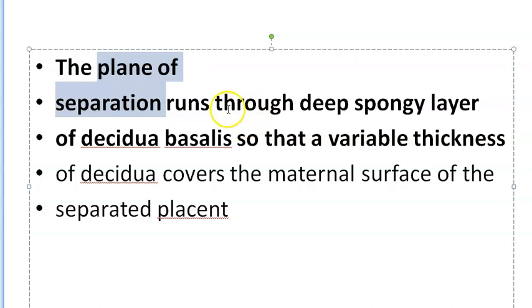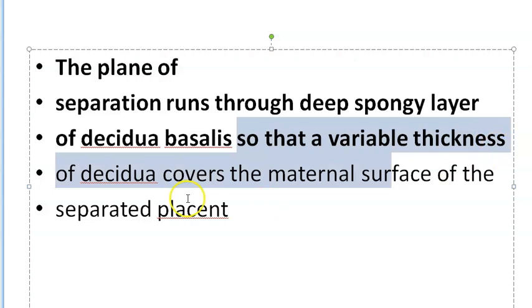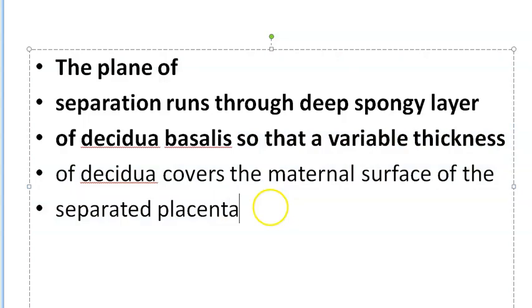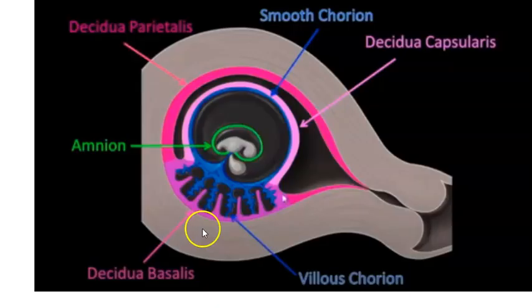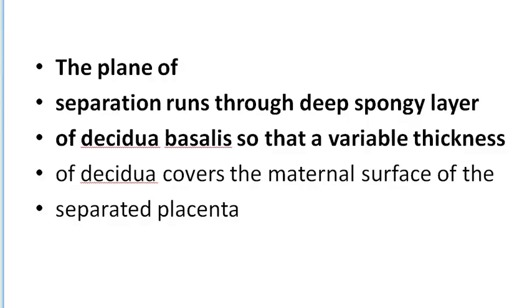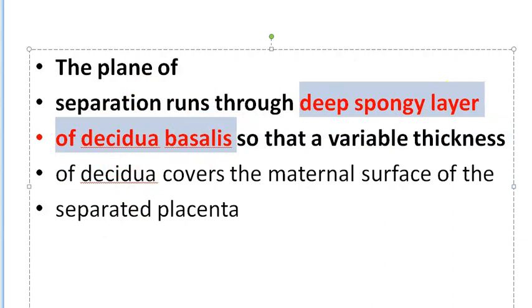The plane of separation runs through the deep spongy layer of the decidua basalis, so that a variable thickness of decidua covers the maternal surface of the separated placenta. Remembering that the plane of separation goes through the deep spongy layer of the decidua basalis is the key point here.